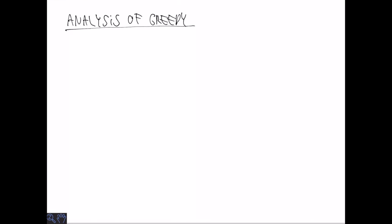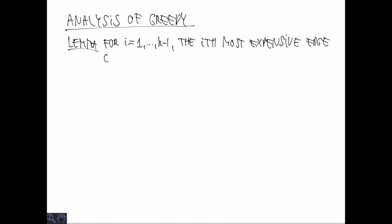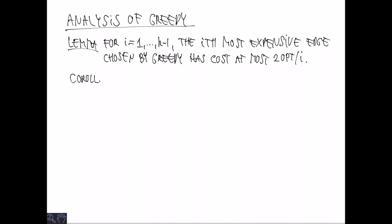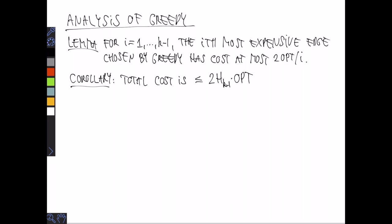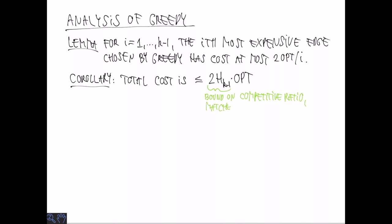Finally, we give an upper bound on the competitive ratio of greedy. The key lemma is that the i-th most expensive edge chosen by the greedy algorithm has cost at most 2·OPT/i, which is tight up to a constant factor for the previous example. The corollary is that we can upper bound the total cost of greedy by 2 times the harmonic number times OPT, giving a competitive ratio of O(log k) — matching the lower bound up to a constant factor.